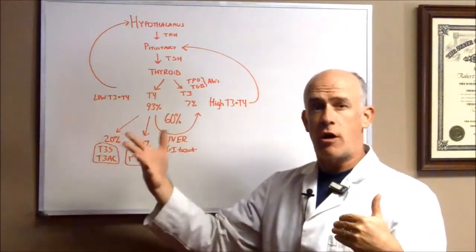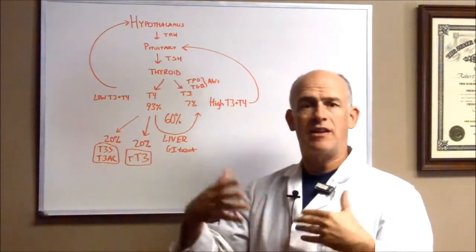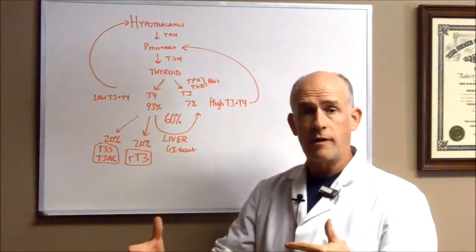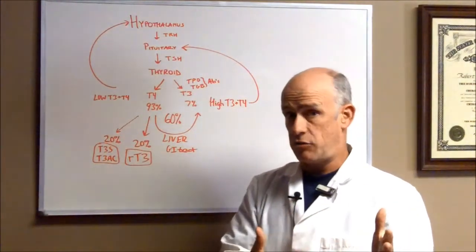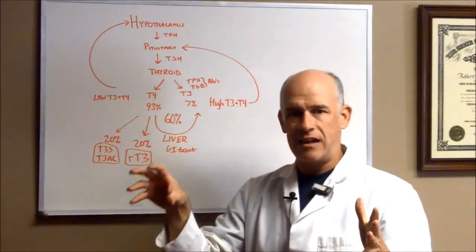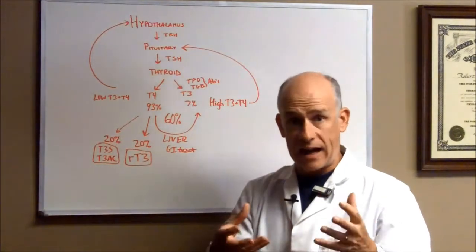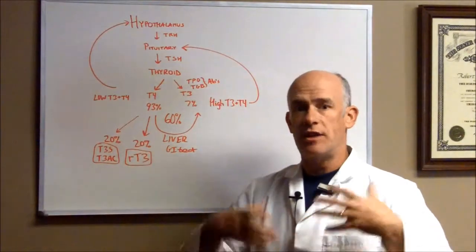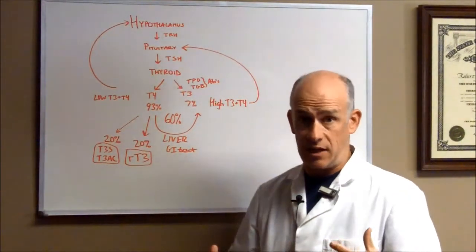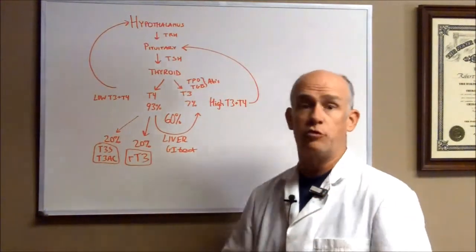T4 is the majority of the hormone that's released from your thyroid. About 93% is T4, and only 7% is T3. T4 is the inactive form. It needs to get converted into T3, the active form. T3 is the one that has an effect on all your body cells, and that gives you energy and improves metabolism.